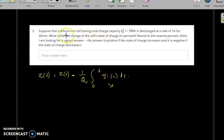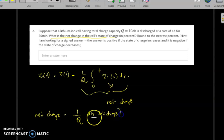We are looking for the net change in the cell's state of charge. This net change can be expressed another way: 1 by Q times the integral, which is ampere-hours discharged.